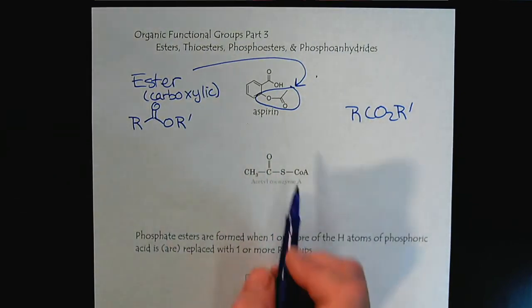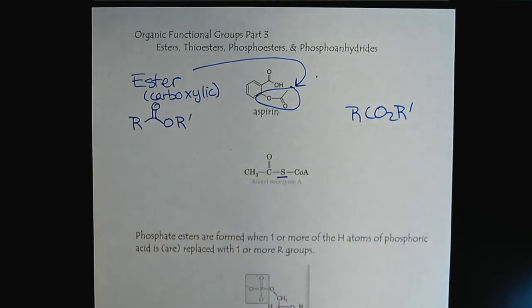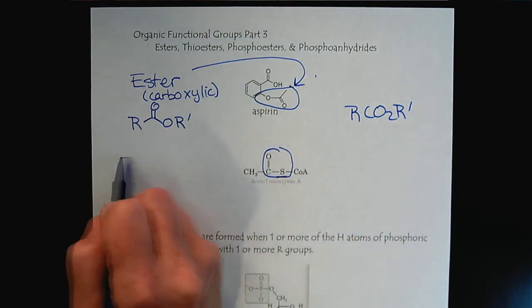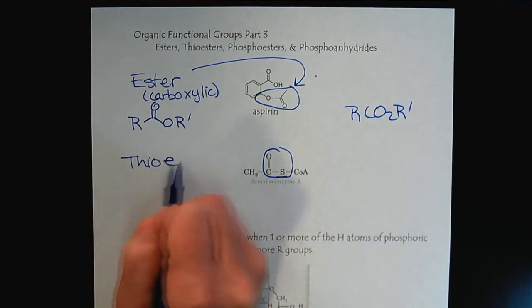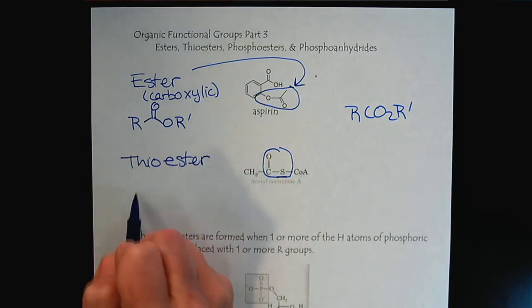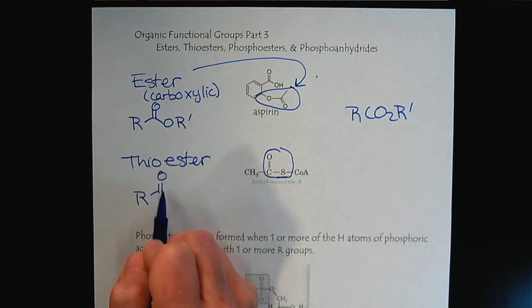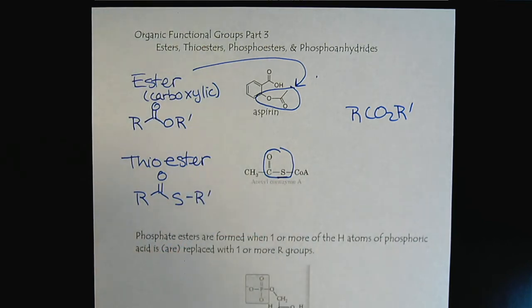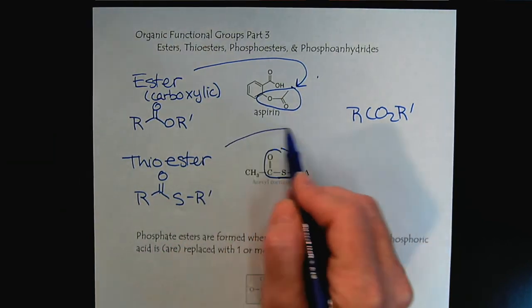Now we've become aware that we can replace oxygen with sulfur. So then this would be an example of a thioester. And so we could write that generically like this. So there's our thioester.